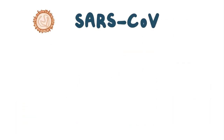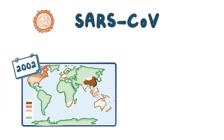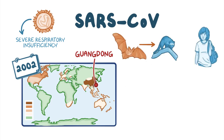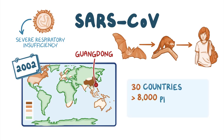SARS-CoV caused the SARS outbreak in 2002. The influenza-like illness can lead to severe respiratory insufficiency and was first reported in the Guangdong province in China. The virus likely has a reservoir in bats that probably came in close contact with civets, a cat-like mammal. These infected civets then likely became an intermediary to infect humans after close contact in live animal markets. Aided by widespread human travel and human-to-human transmission, SARS spread rapidly to more than 30 countries, infecting over 8,000 people and resulting in 774 deaths.